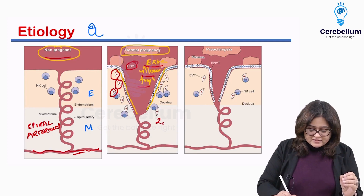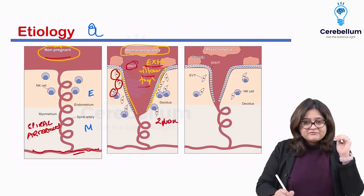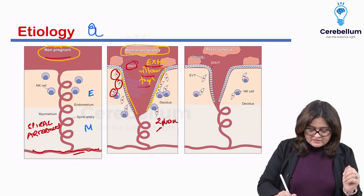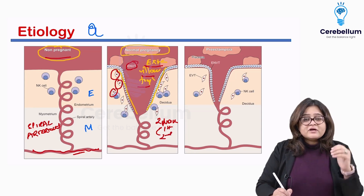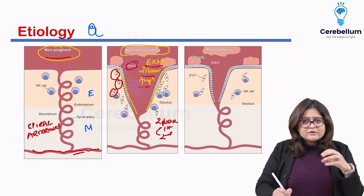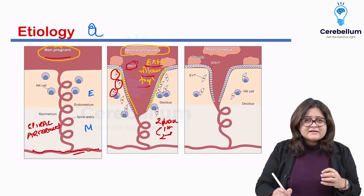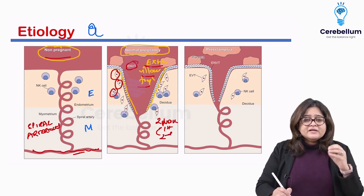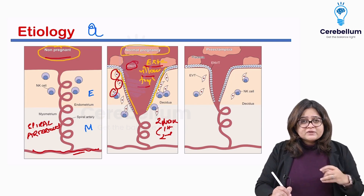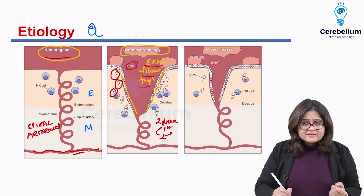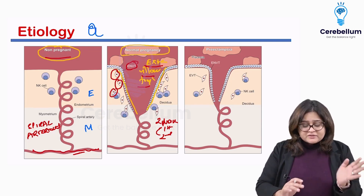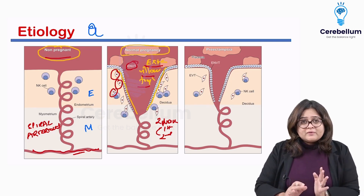This invasion of extra villous trophoblast occurs in two phases. One happens in the first trimester, and the second happens in the early second trimester. The early second trimester is when the second wave of trophoblastic invasion takes place.